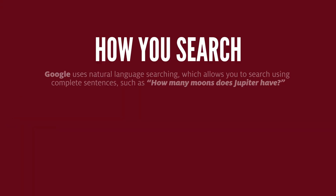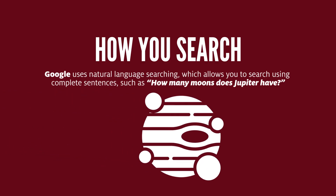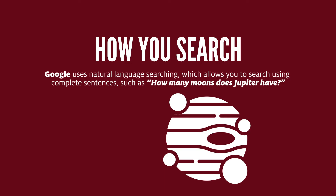Also, how you search is different. Google uses natural language searching, which allows you to search using complete sentences such as, how many moons does Jupiter have? Google also searches the full text of resources, which usually means you get many results, but not all of them are relevant to your search query.